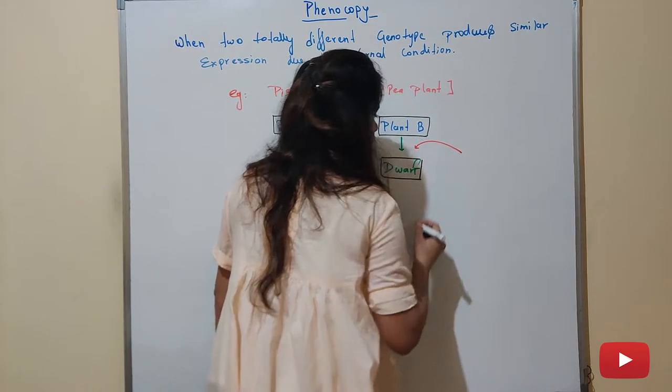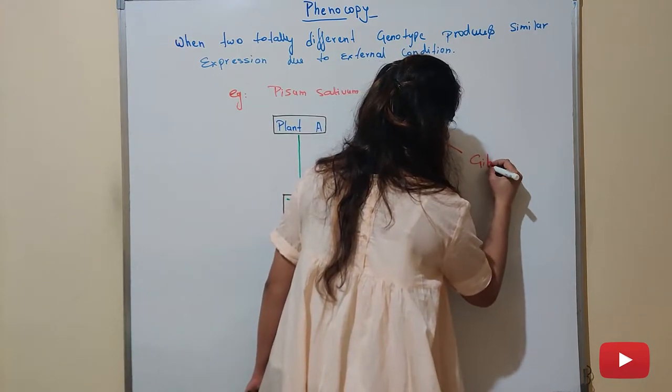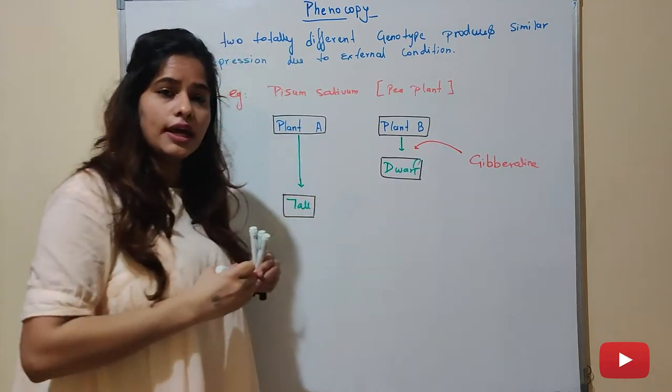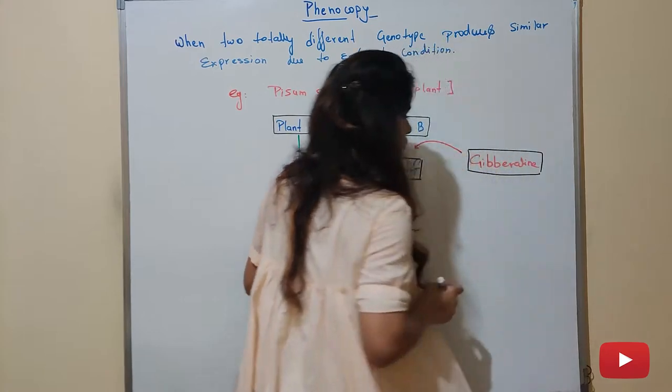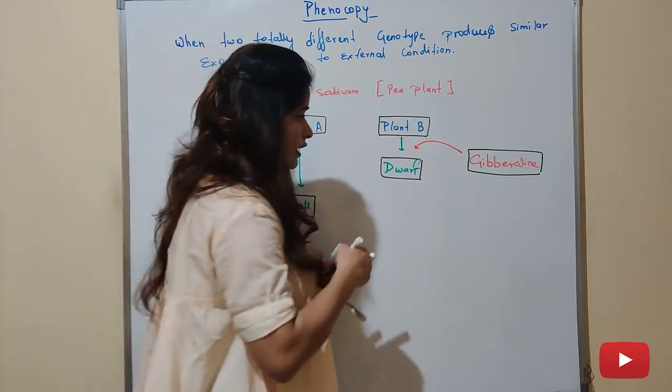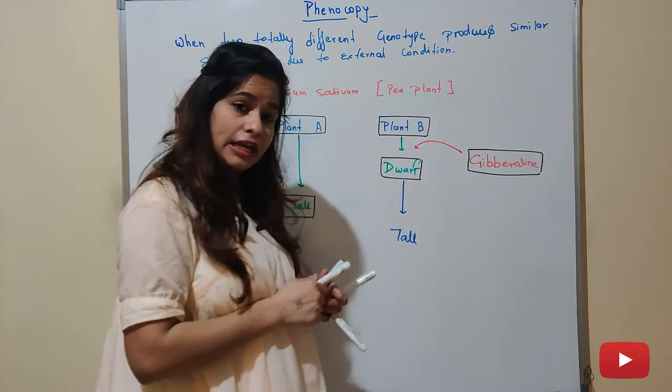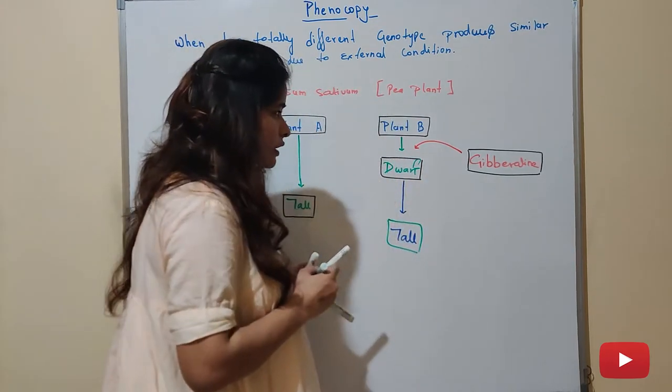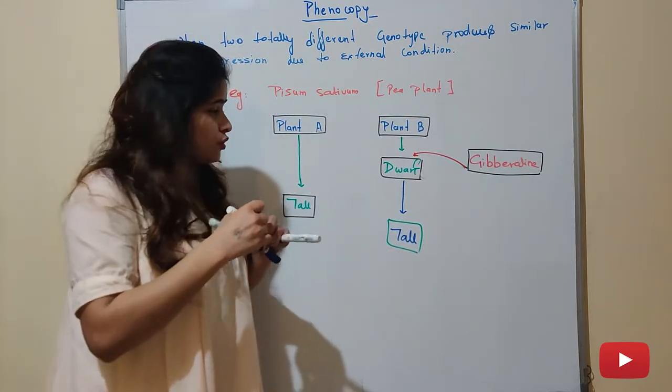So students, as we know, this is Plant B and gibberellin is a plant hormone. Now this plant is tall.